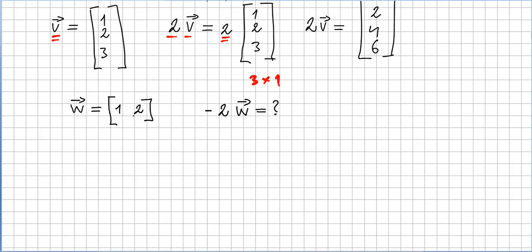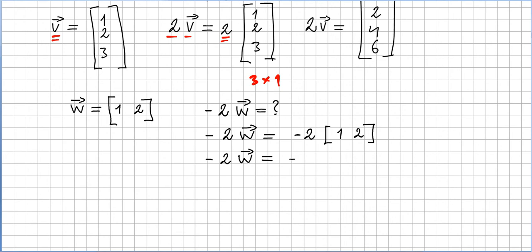If your vector is given as a row matrix, say w equals (1, 2, 2), then what is minus 2w? Well, minus 2w will be minus 2 times (1, 2, 2), giving (minus 2, minus 4). So this is the scalar product.